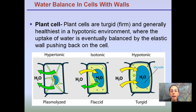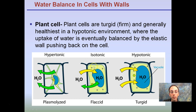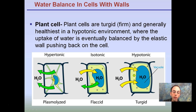In an isotonic environment, plant cells become flaccid and can start to wilt a little bit. Water is coming in and out, and that's okay, but the plant is a little flaccid. Then in the extreme case of hypertonic, where a lot of water is leaving, this is basically where the plant is really wilting down heavily, which can cause severe damage to it.